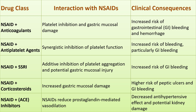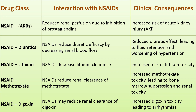ACE inhibitors lower blood pressure by promoting vasodilation; however, NSAIDs reduce prostaglandins needed for vasodilation, leading to reduced antihypertensive effects and potential kidney damage. Angiotensin II receptor blockers help regulate blood pressure and kidney function; when combined with NSAIDs, renal blood flow can be further reduced, increasing the risk of acute kidney injury — patients with kidney disease should avoid this combination. Diuretics help remove excess fluid, but NSAIDs can counteract this effect by promoting sodium and water retention, leading to worsened hypertension, edema, and heart failure. Patients on diuretics should avoid long-term NSAID use.